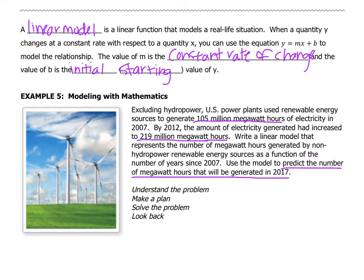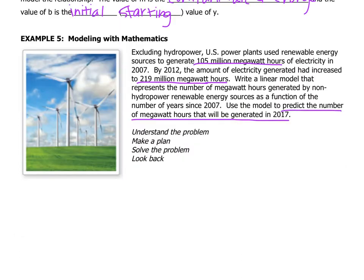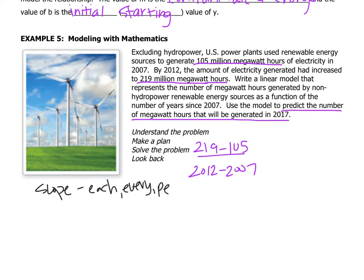So if the way that we find the slope is to find the rate of change, what we can do is we can use the information that they gave us about 2007 and 2012 and find that change. How much did it change per year? So what happened was it went 219 minus 105. That's how much it changed, but that change happened over the course of several years. So what we do is then we have to divide by 2012 minus 2007. How much did it change per year? Remember, slope phrases are each, every, and per. So we need to find out how much it changed per year. So let's just do our subtraction. We get 114 on the top, and that is 5 on the bottom.